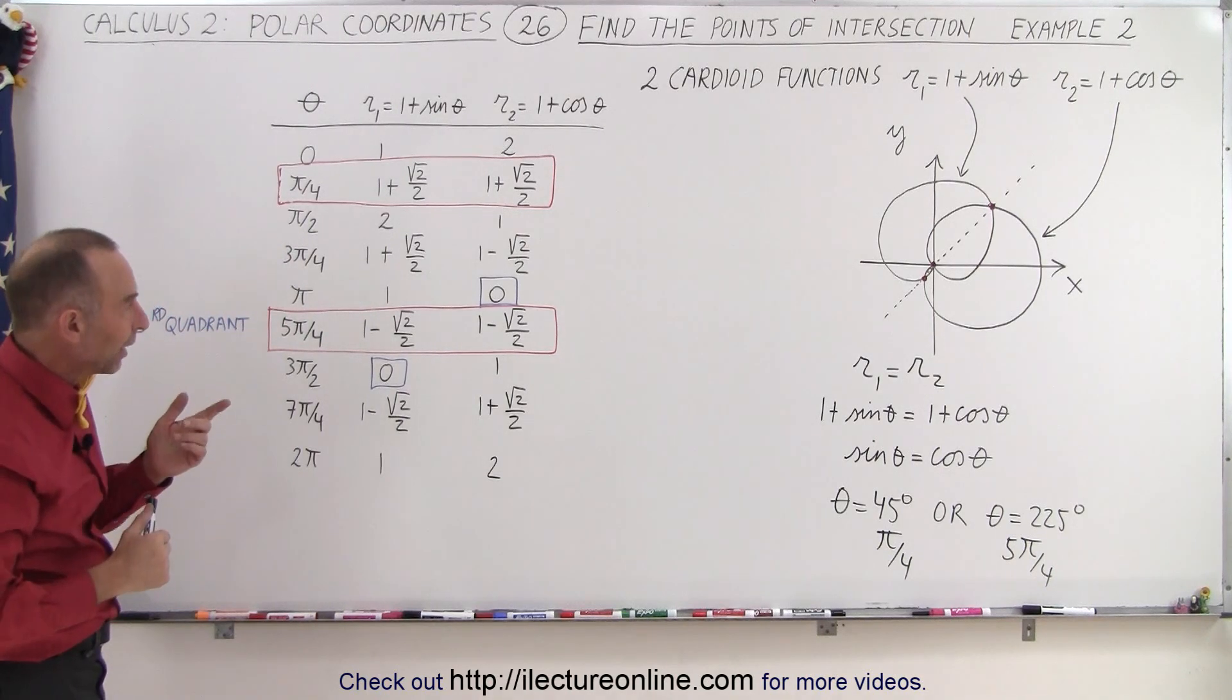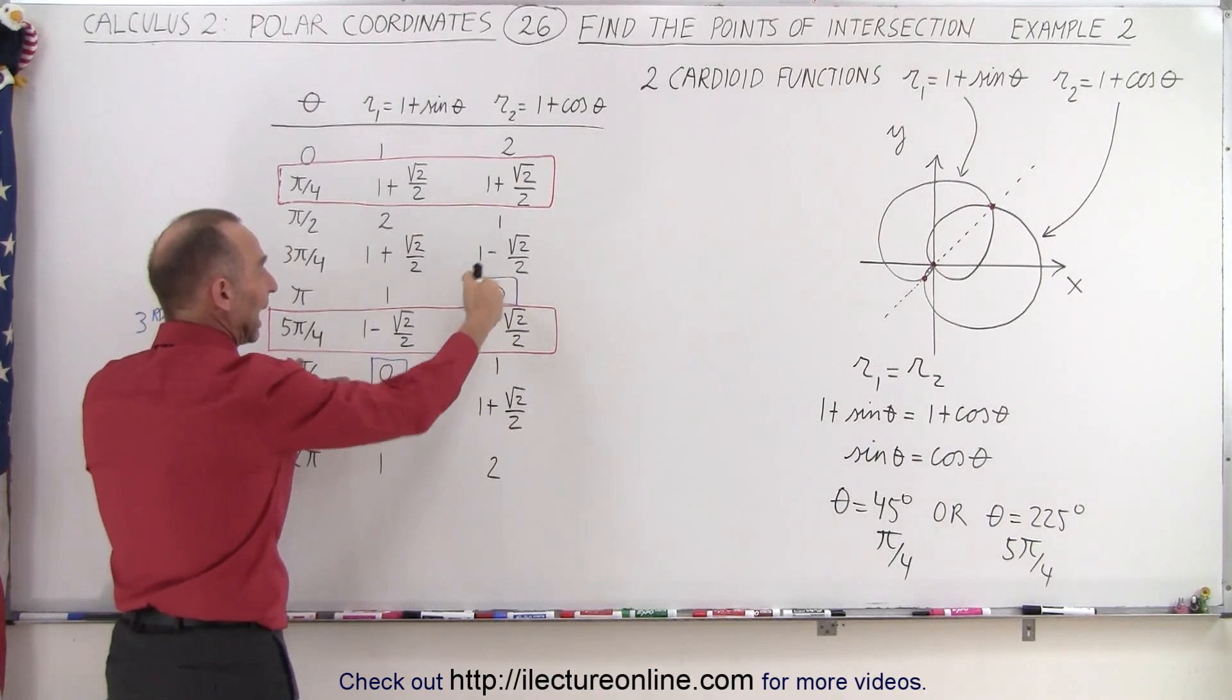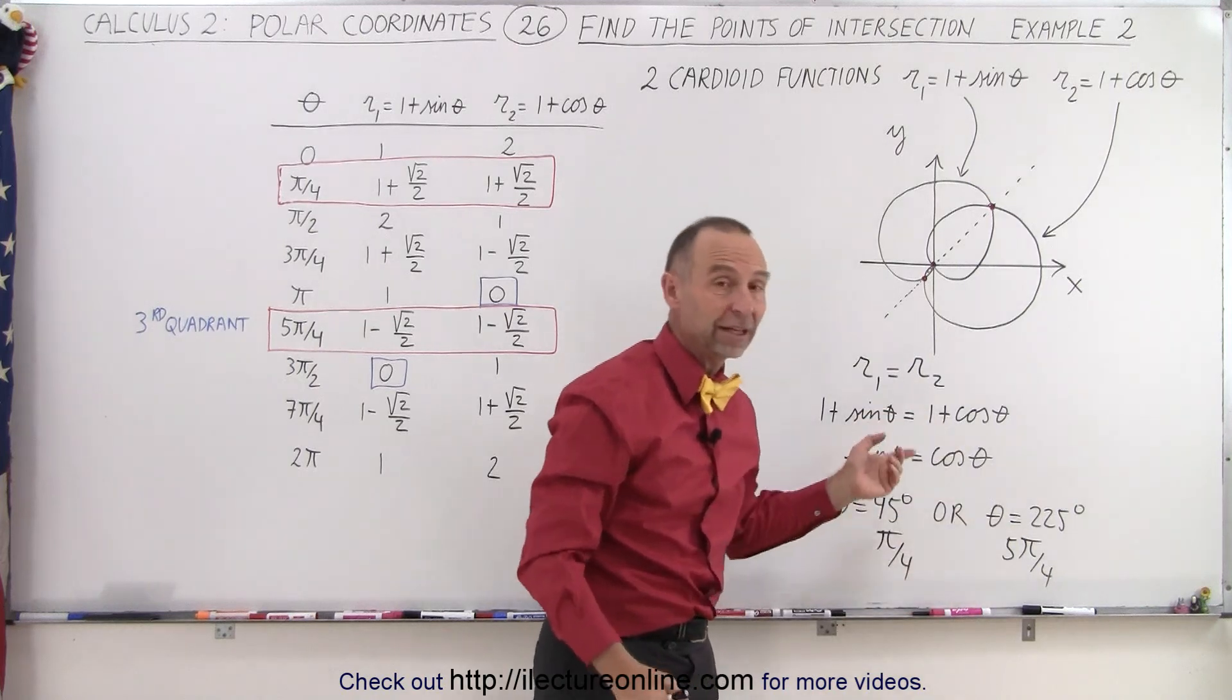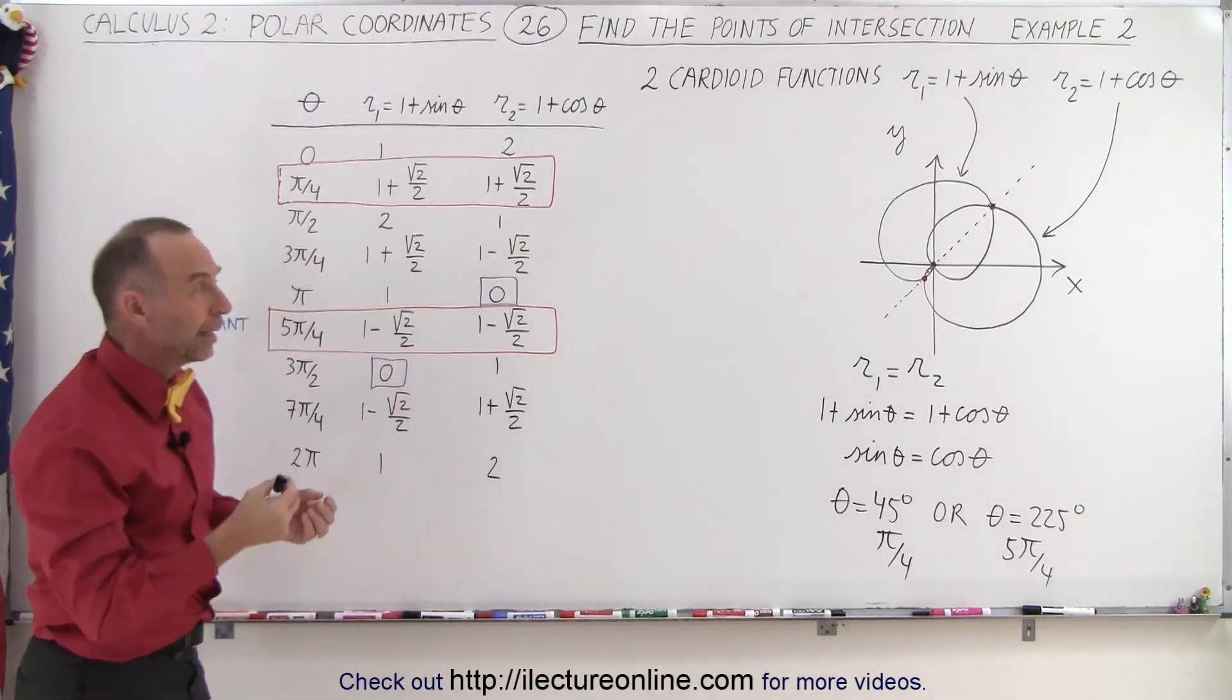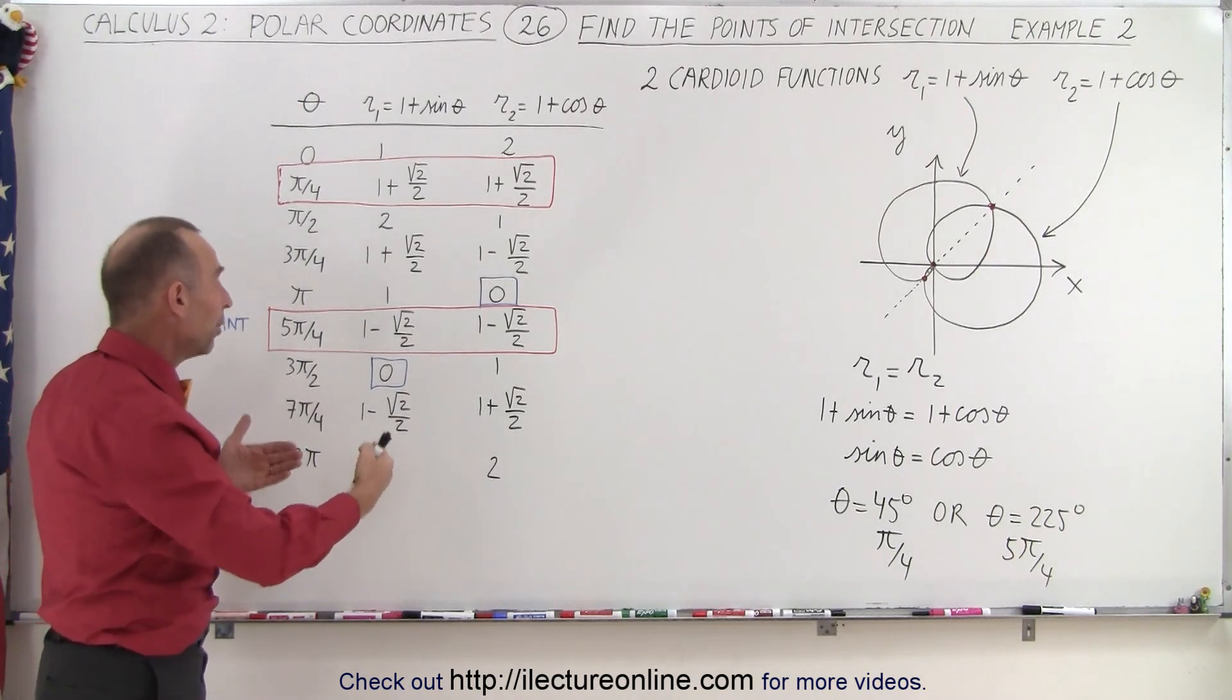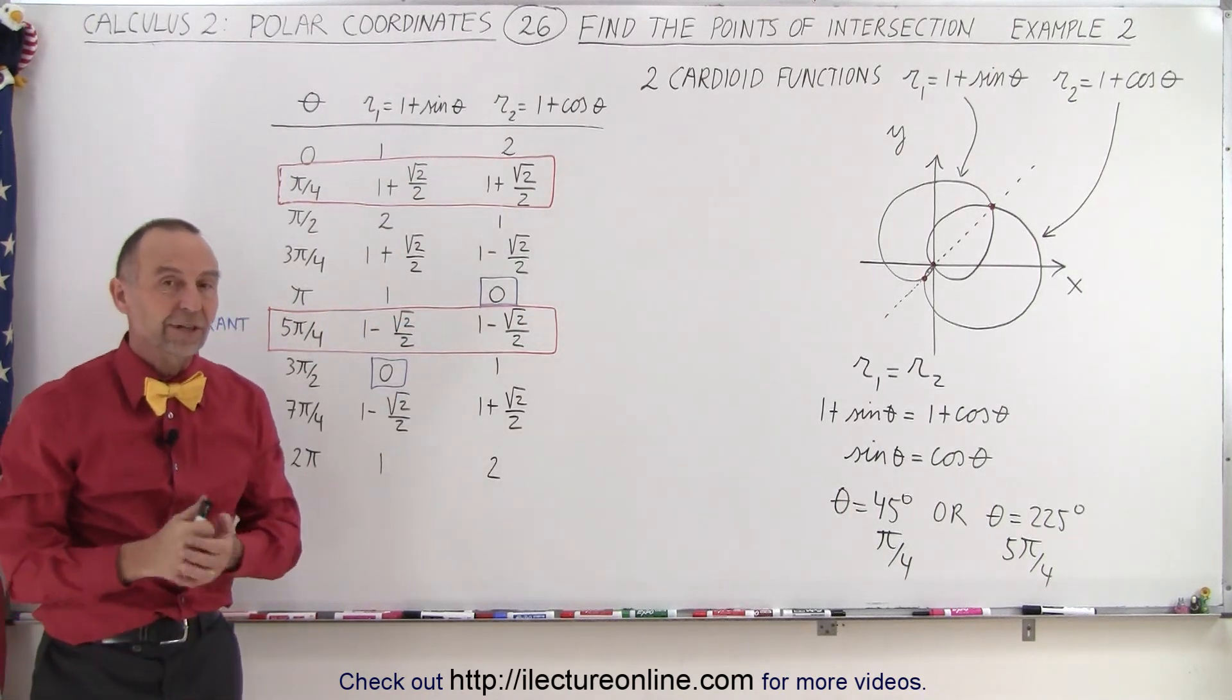Now we also realize that both functions will indeed become zero, but for different angles. And since that happens for different angles, that third point at the origin could not be found using this technique because for the same angle theta, both the functions do not have the value equal to zero at that time. It is at different angles, I shouldn't say time, but at different angles, and therefore we can only really realize that's the case by drawing it graphically or by building up a table of values like this.